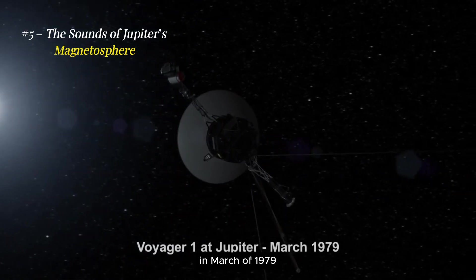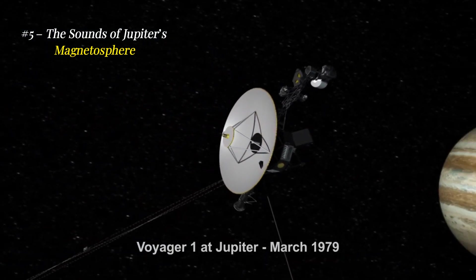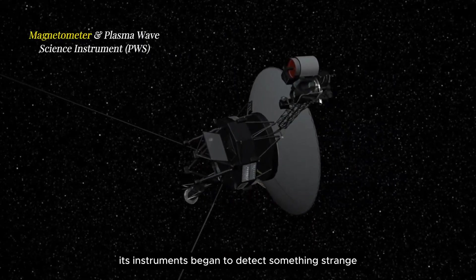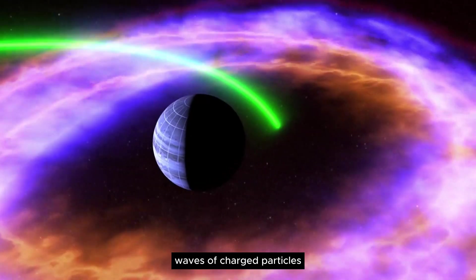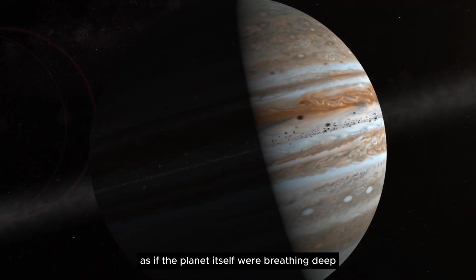In March of 1979, Voyager 1 reached the giant world of Jupiter, the first close encounter of its kind. As it approached, its instruments began to detect something strange. Waves of charged particles rippling through the emptiness, as if the planet itself were breathing.